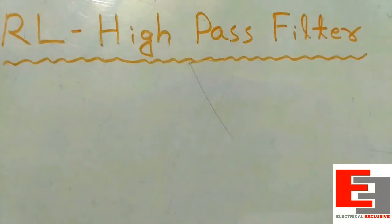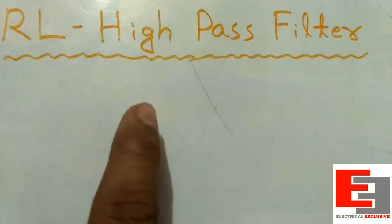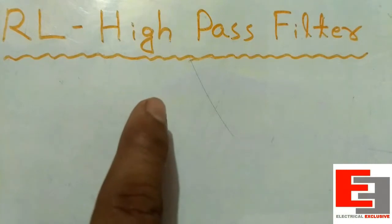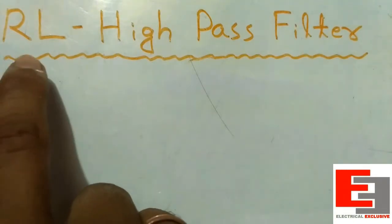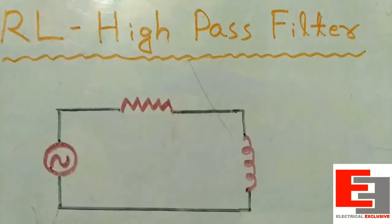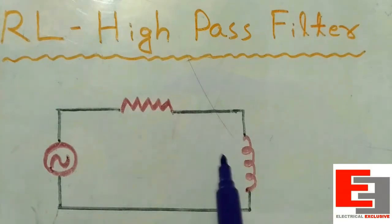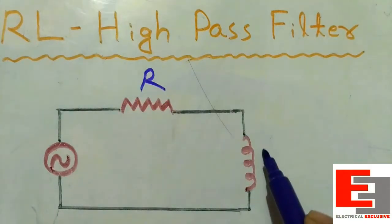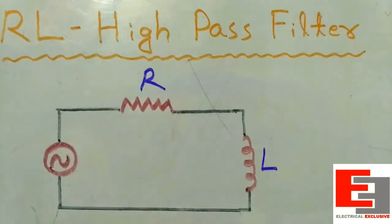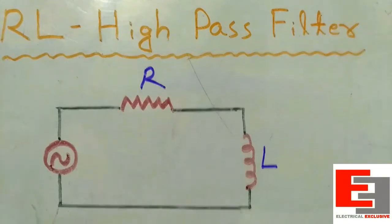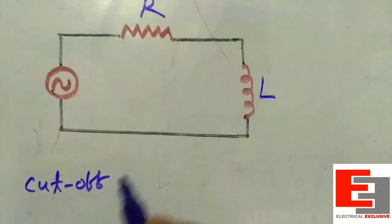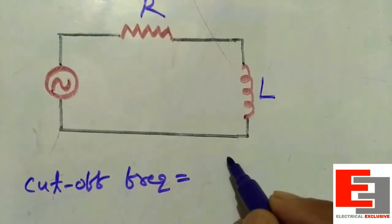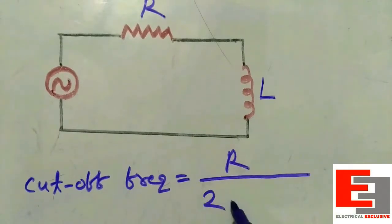Now we shall discuss about the RL high pass filter. Its name itself reveals everything about the filter circuit. To make an RL high pass filter we need a resistor and an inductor. This is the RL high pass filter circuit, which consists of a resistor R and an inductor L. Now we need to calculate the cutoff frequency, which is equal to R / (2πL).